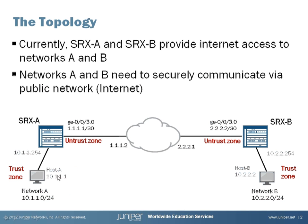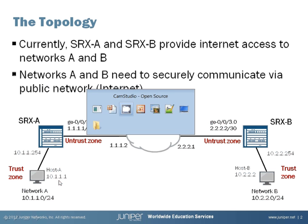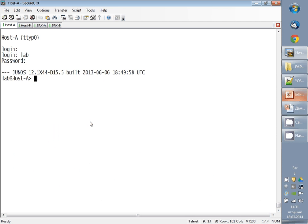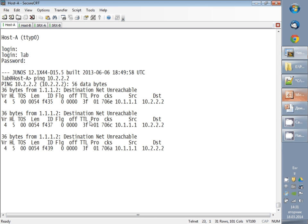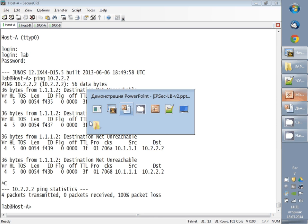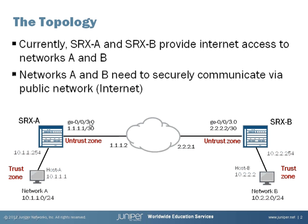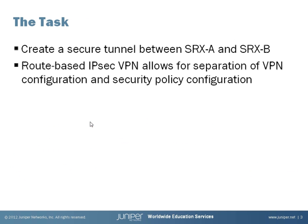We can check that Host A cannot ping Host B, because there is no tunnel yet and no communication between those networks is possible. From Host A I send a ping to 10.2.2.2 and you see it gets a destination unreachable error. What we will do now is create a secure tunnel between SRX-A and SRX-B.